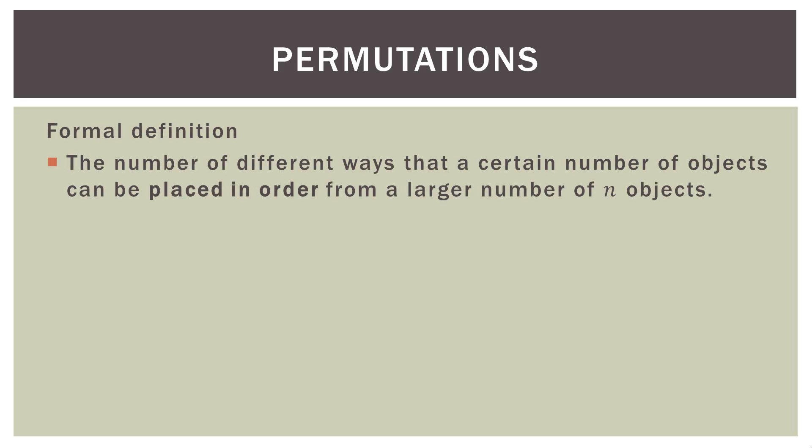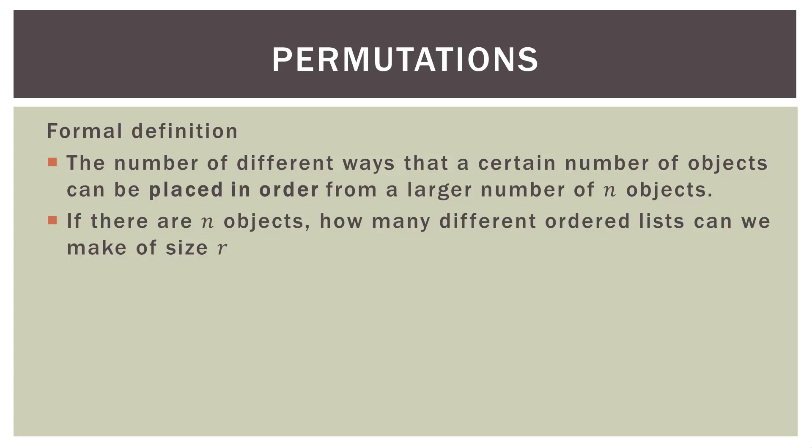So let's talk about a formal definition. A permutation is the number of different ways that a certain number of objects can be placed in order from a larger number of n objects. More abstractly: there are n objects — how many different ordered lists can we make of size r? There are several ways to write this notation, but we use P(n, r), where n is the total number of objects or events and r is the subgroup we're interested in. Just remember that n is the overall total and r is the size or length of the list we're making.